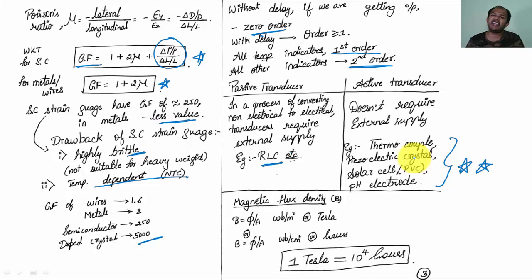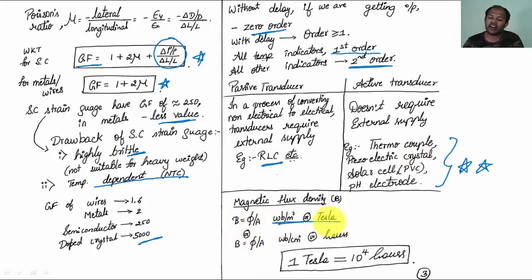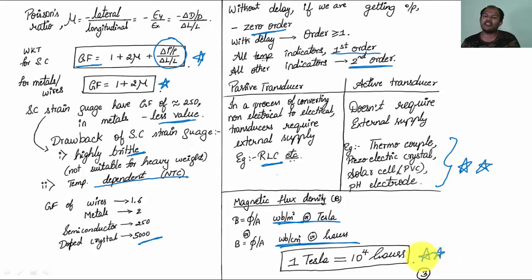Magnetic flux density B equals phi divided by A, expressed in Weber per meter square or Tesla. If expressed in Weber per centimeter square, it is Gauss. So 1 Tesla equals 10^4 Gauss. This is important.